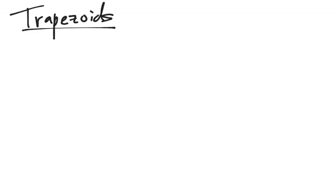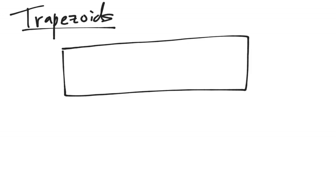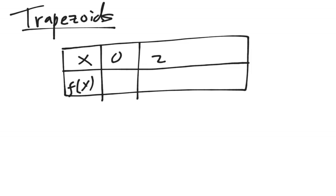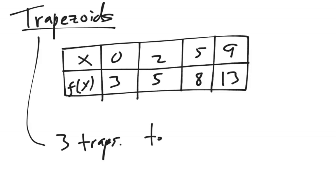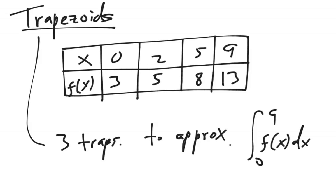Speaking of trapezoids, let's do it — different problem this time. Let's say we have a chart with a continuous function. We have x values 0, 2, 5, and 9, and f(x) values 3, 5, 8, and 13. We're going to use 3 trapezoids to approximate the integral from 0 to 9 of f(x) dx. Remember, integral is area, so we're approximating area. You'll know to use trapezoids because the problem will say 'use trapezoids.'